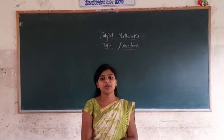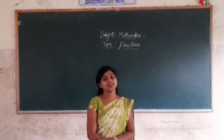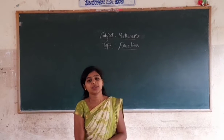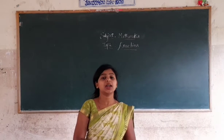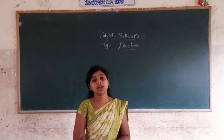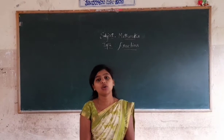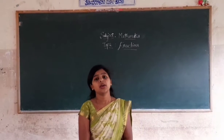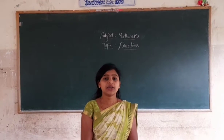Hello everyone. In our previous class, we learnt about fractions — fractions on the number line and types of fractions. The first type is proper fractions, where the numerator is less than the denominator. Improper fractions means the numerator is bigger than the denominator. We also learnt mixed fractions, which contain a whole and a part. Now we move on to another type: equivalent fractions.